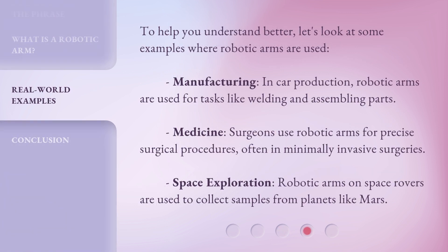To help you understand better, let's look at some examples where robotic arms are used. In manufacturing, such as car production, robotic arms are used for tasks like welding and assembling parts. In medicine, surgeons use robotic arms for precise surgical procedures, often in minimally invasive surgeries. In space exploration, robotic arms on space rovers are used to collect samples from planets like Mars.